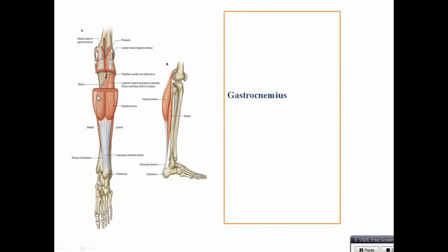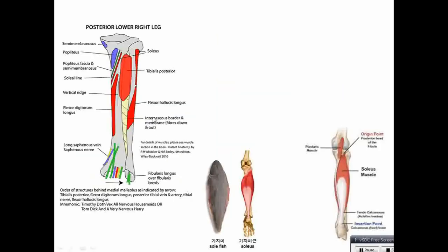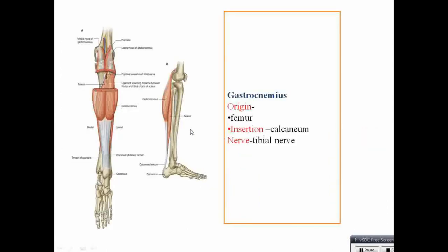Gastrocnemius can be seen with origin from the femur. It has two origins: medial head and lateral head. The two bellies unite and form a tendon in the lower aspect, inserted to the calcaneum. Nerve supply: tibial nerve, which is a branch of sciatic nerve.